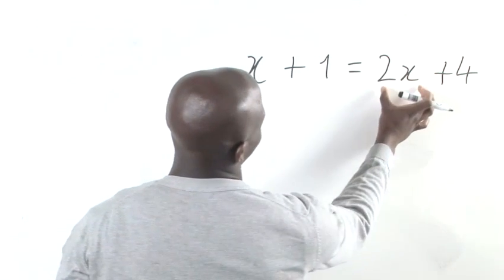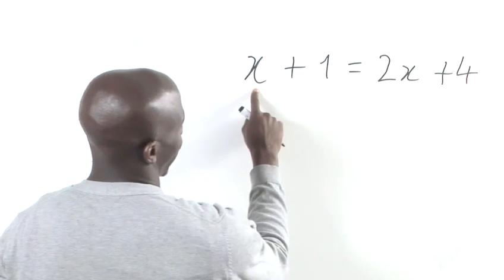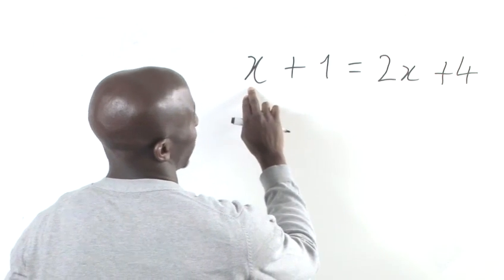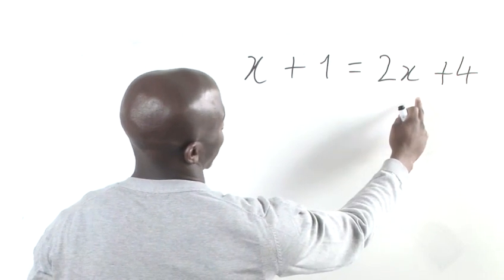Looking at our x's here, we've got 2x's here and we've got 1x here. So it will be easier to take that one x over to the other side.